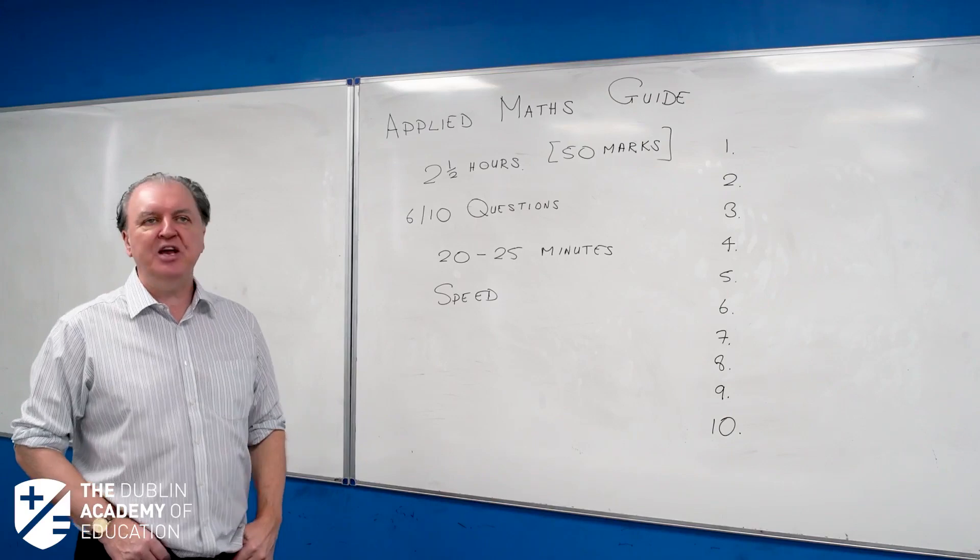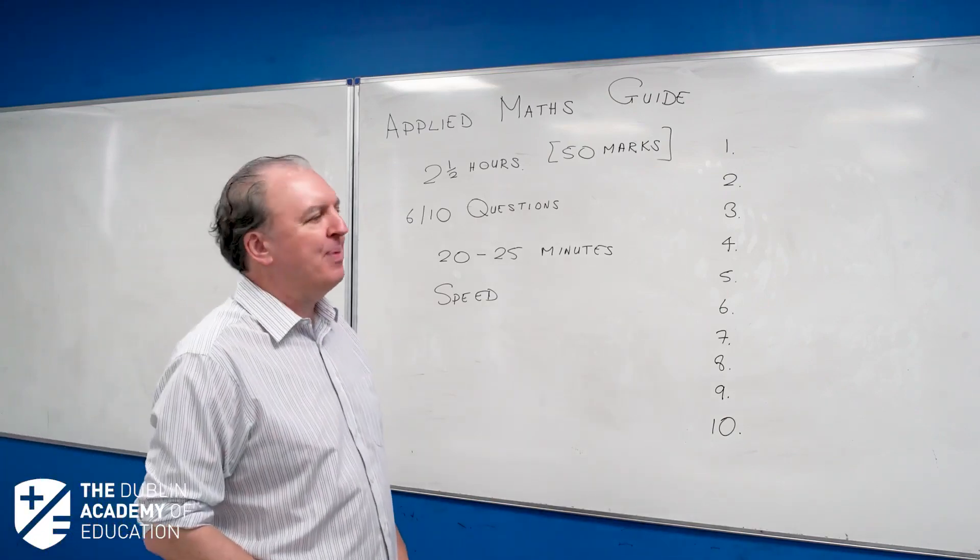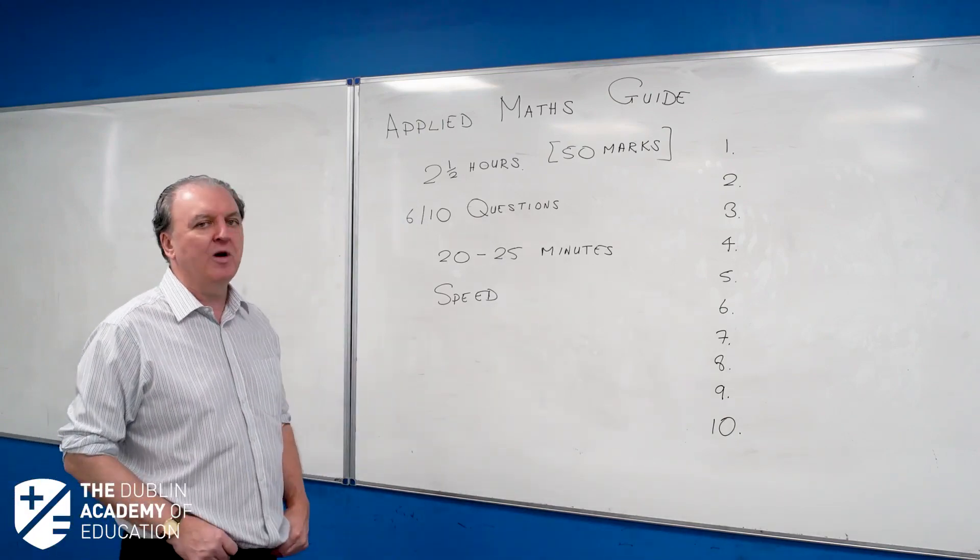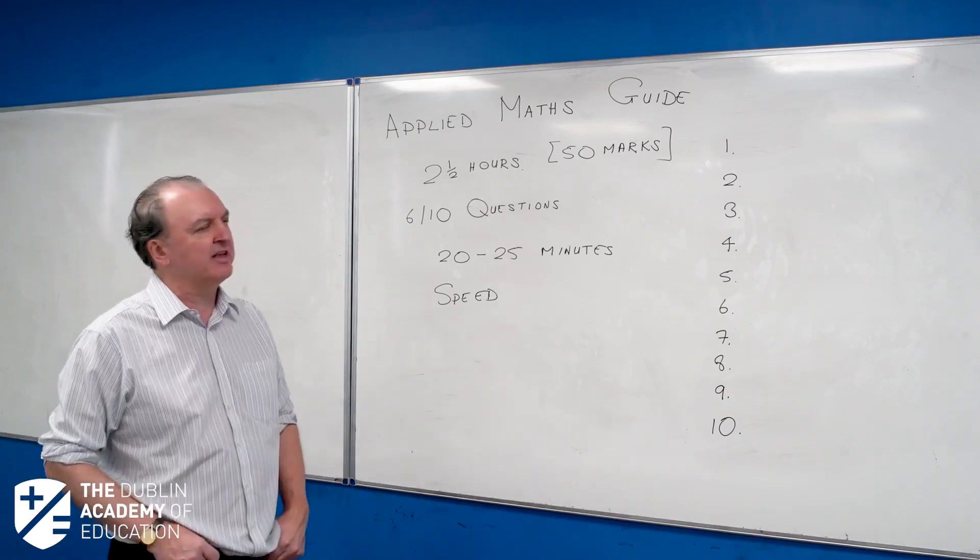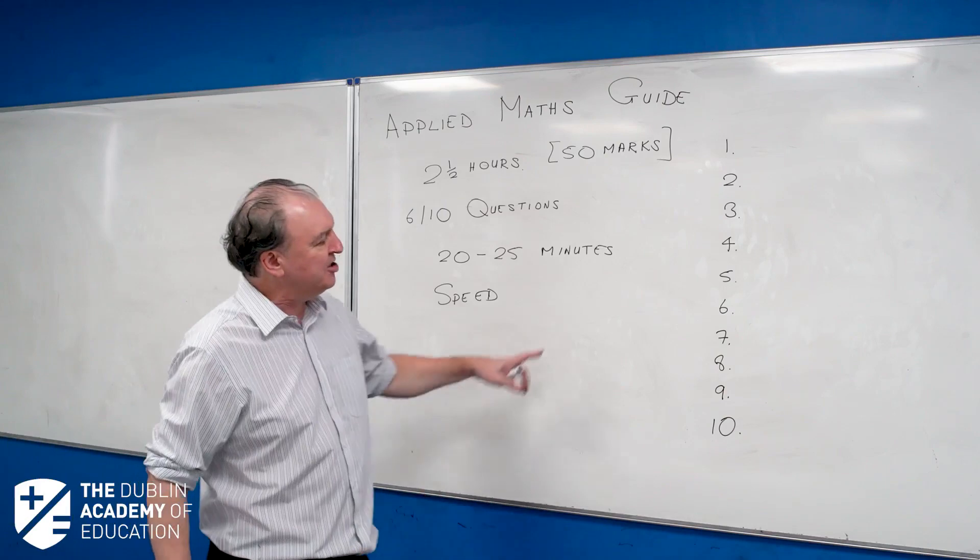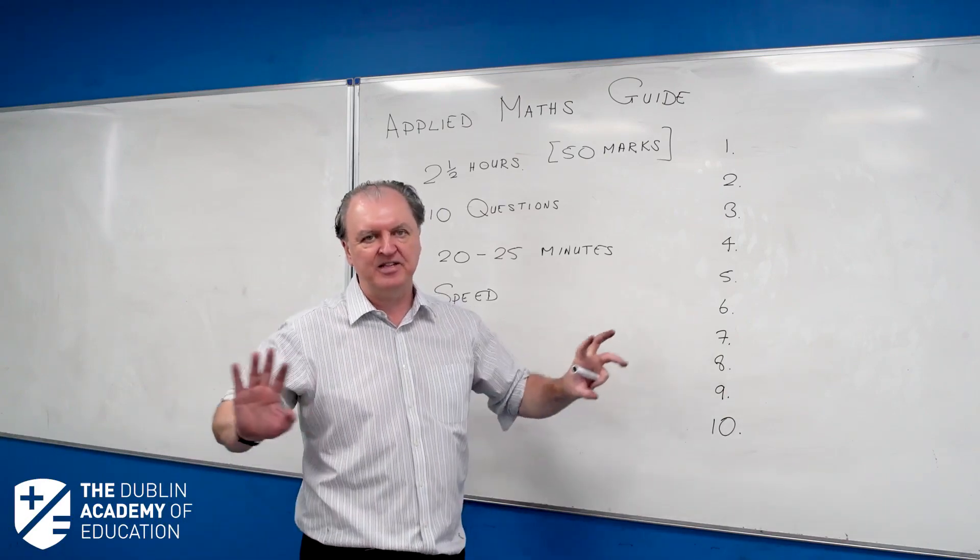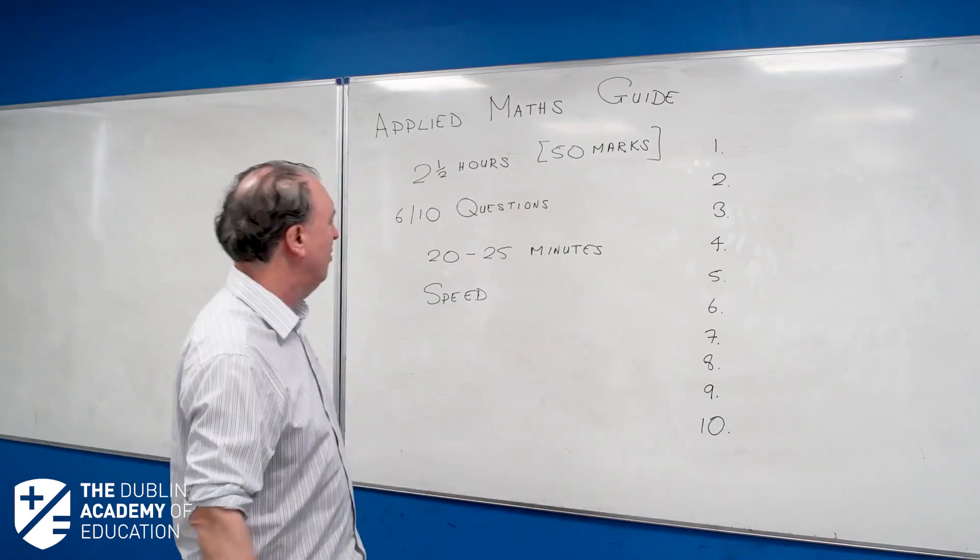When you set up the question, draw your diagrams, apply your equations, when you try and solve them, then you are getting most of the marks. Do I want to spend an extra fifteen minutes to get an extra five marks? And then as a result, I end up leaving out a full question or a half question. That's a disaster. So you have to be very disciplined with your timing.